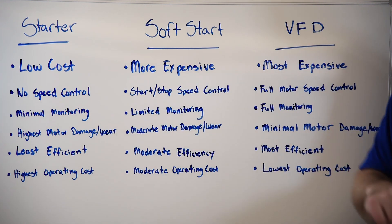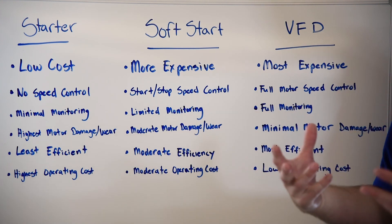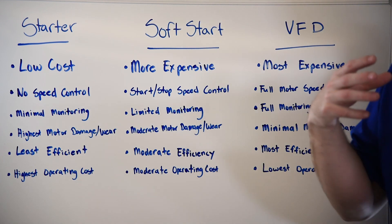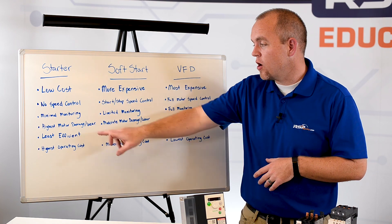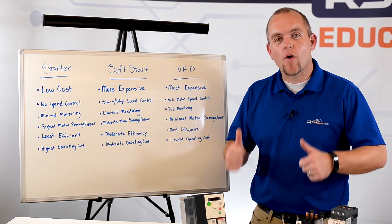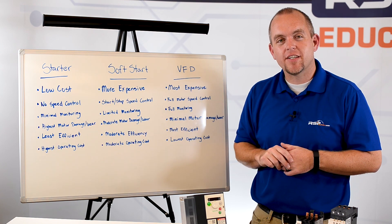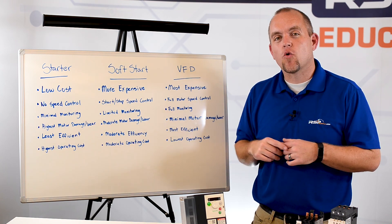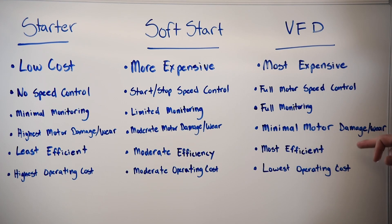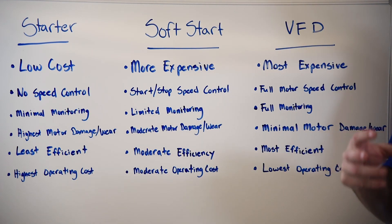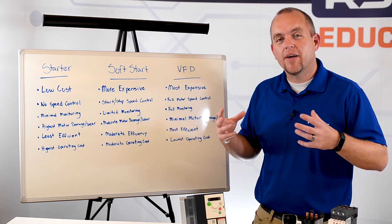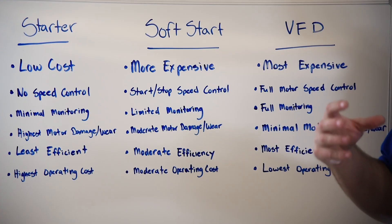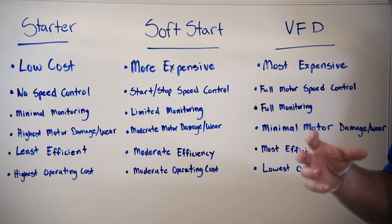Next, we have very little monitoring with a starter — maybe run status. A soft starter gives us a little extra monitoring if we need it, but a VFD gives us the ability to fully monitor our motor control. When talking about wear and tear on our motor, a starter is going to be the hardest on our motor because it ramps up so quickly and there's such a high inrush of current, causing the motor to degrade over time much more quickly. A VFD gives us very minimal motor damage and wear over time because of the control we have. A soft starter falls somewhere in between, allowing us to slowly ramp up only upon startup and in some cases upon shutdown.